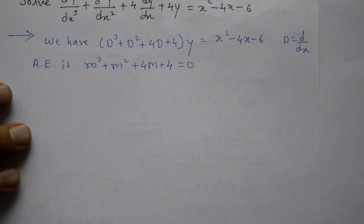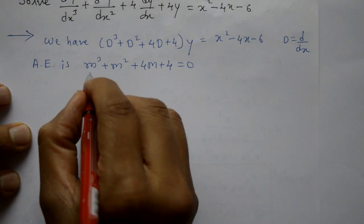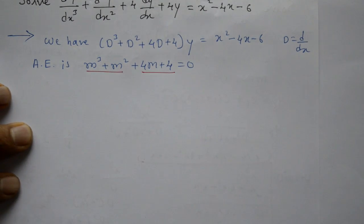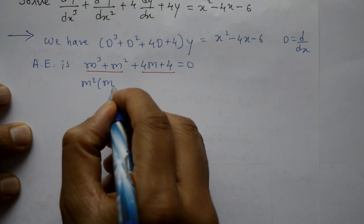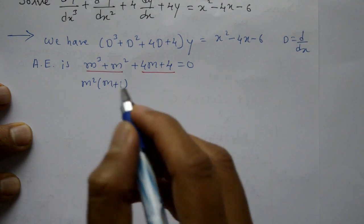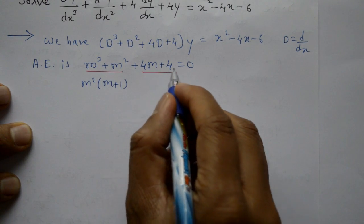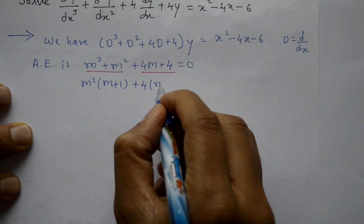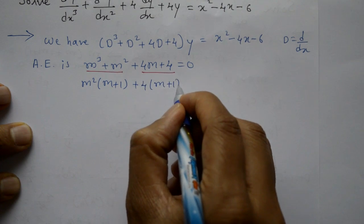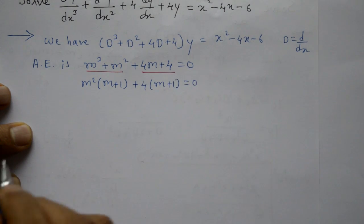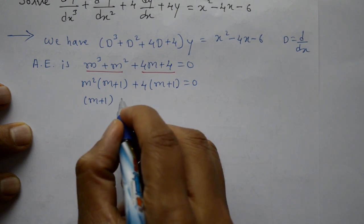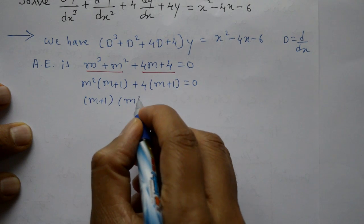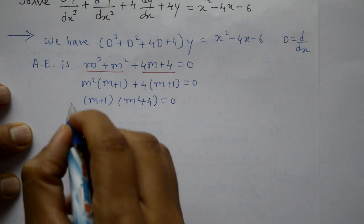Group the first two terms and last two terms. From the first two terms, m² is common: m²(m + 1). From the third and fourth terms, 4 is common: 4(m + 1) = 0. So (m + 1)(m² + 4) = 0.